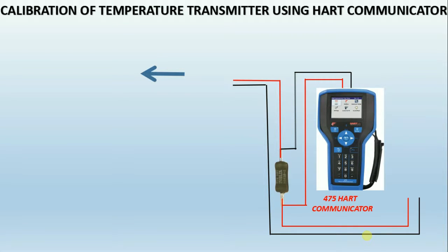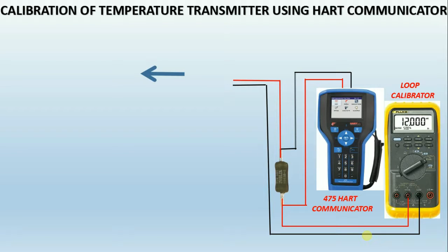What is a loop calibrator? For process calibration professionals, loop calibrators are essential tools for working with 4 to 20 milliamps current loops. Process control loop calibrators provide milliamps sourcing, simulation, and measurement, with readouts in both milliamps and percent of span, and a 24-volt loop supply.